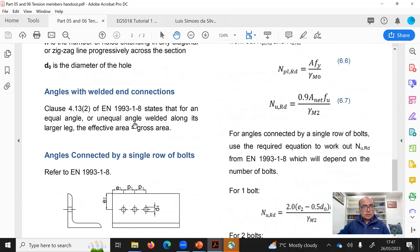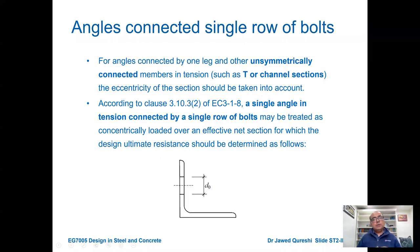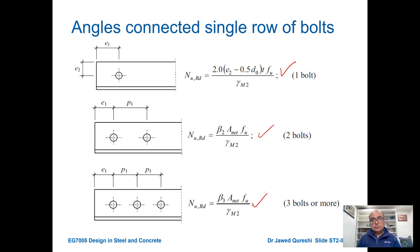Leg angles are connected with unsymmetric members like T sections or channel sections, where eccentricity has to be considered. A single angle in tension connected by a single row of bolts can be treated as concentrically loaded over an effective net section. Design plastic resistance remains the same for leg angles, but ultimate resistance will be different. If angles are connected with one bolt, we use the first formula; two bolts, the second formula; three or more bolts in a single row, the third formula.